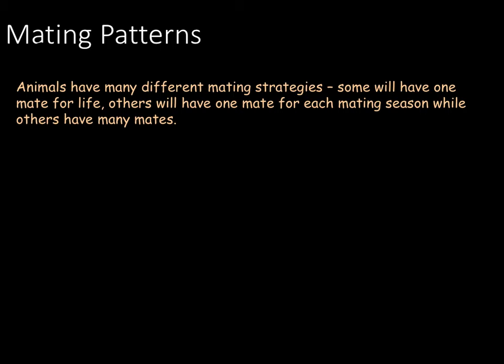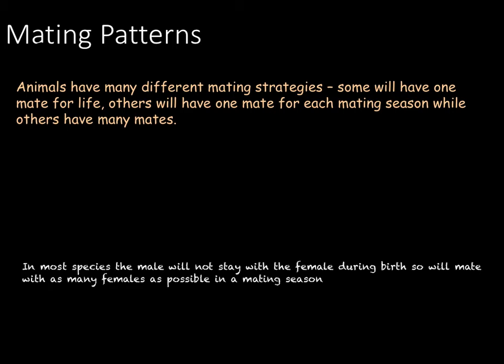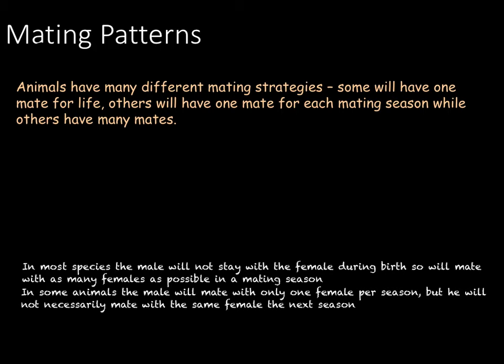Monogamy — staying with just one mate — is quite rare in the animal kingdom and occurs mostly in birds. In most species, the male takes no part in the birth or care of the young, so once he has mated he will move on and find another female to mate with in the same season. In some species, for example some birds, the male will mate with one female each season, although this is not necessarily the same female from season to season.